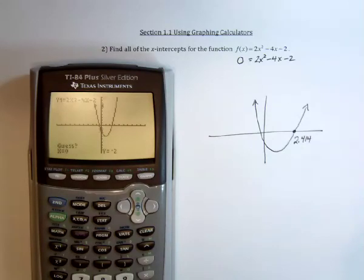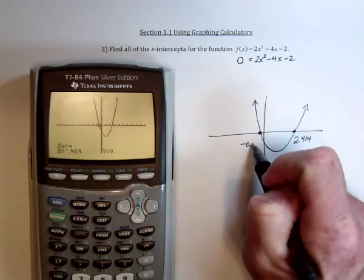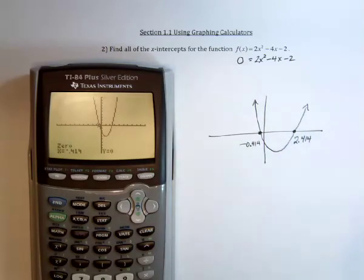And my guess is that the answer is negative 0.5. Turns out that it's negative 0.414. So negative 0.414. And there are the two x-intercepts.